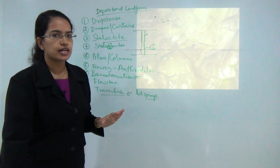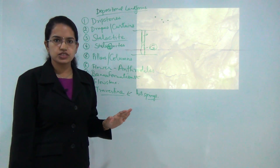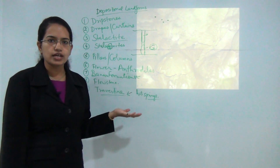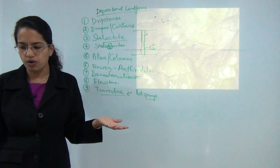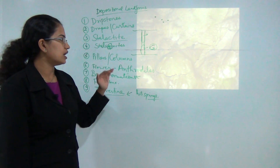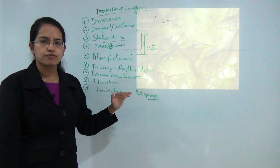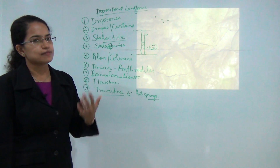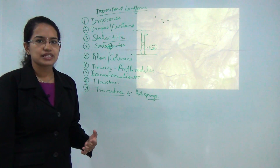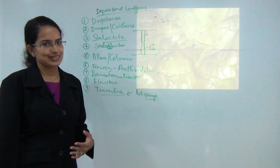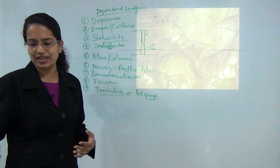So what we have covered today are the erosional and the depositional features of karst topography and how karst landforms are formed. We will be covering further types of landforms in the next classes. You can subscribe to the Exam Race channel for any further updates. Stay tuned and have a good day ahead.